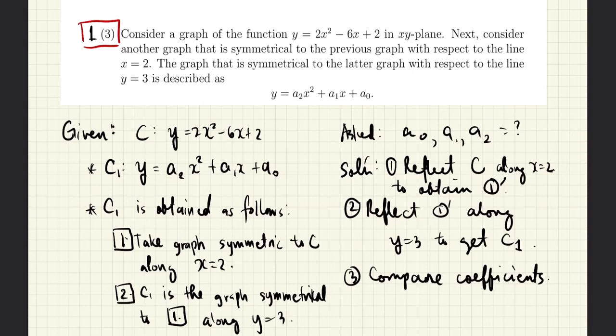We are given two curves, C and C1. The curve C1 has coefficients that are unknown. They are called A0, A1, and A2.